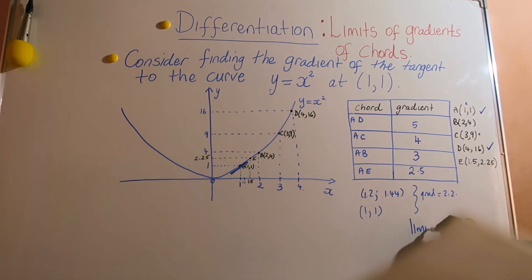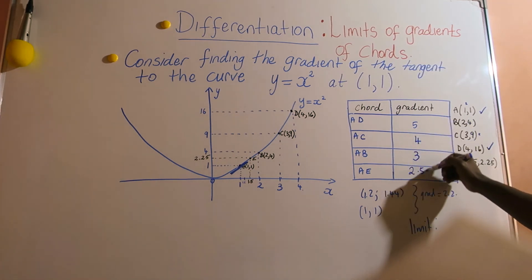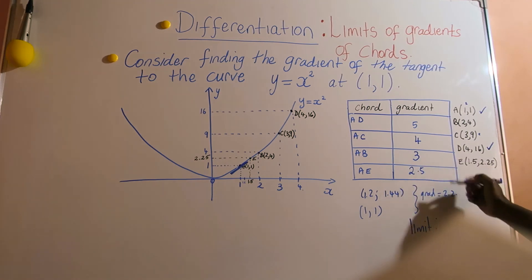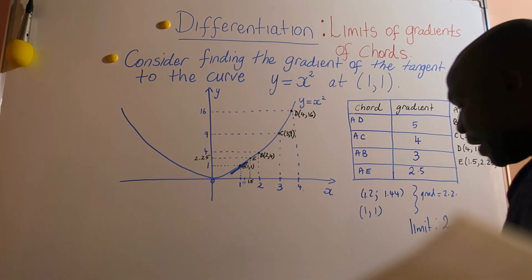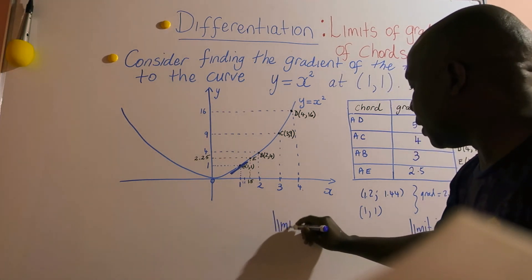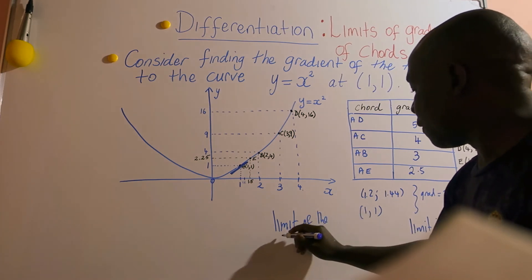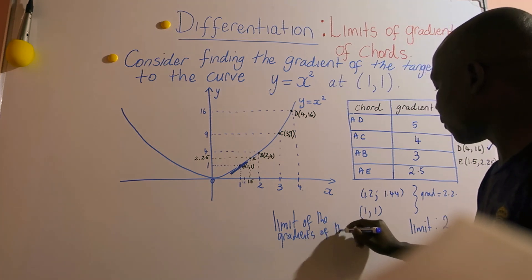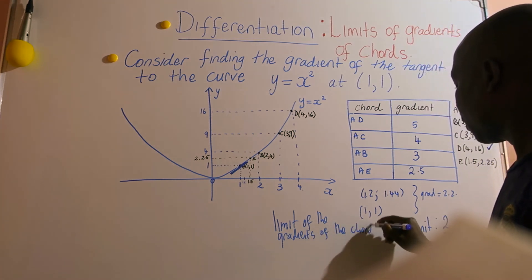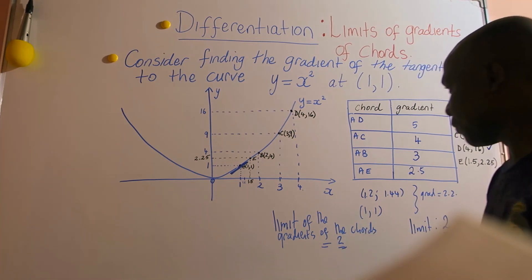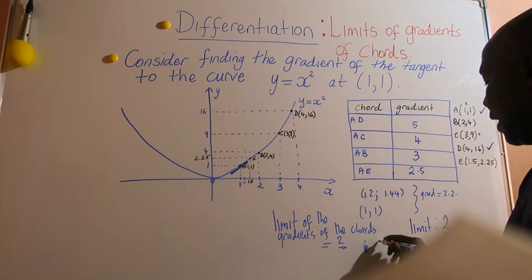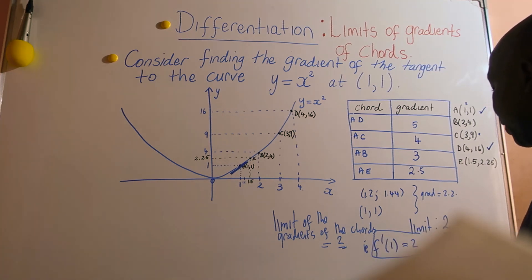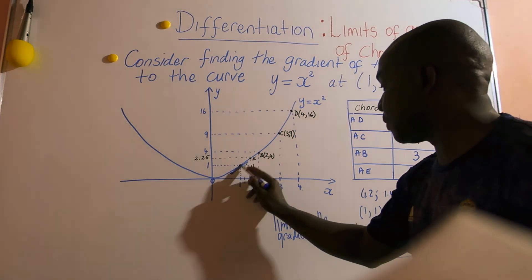So we are taking a point which is closer. As you are moving closer, you see that these gradients approach a limit. So what is the limit of these gradients? 5, 4, 3, 2.5, 2.2. So we are getting close to a limit of 2. What we are saying here is that the limit of the gradients of the chords is equal to 2. So that is, we are saying that f prime at 1 is equal to 2. The gradient at this point therefore is 2.